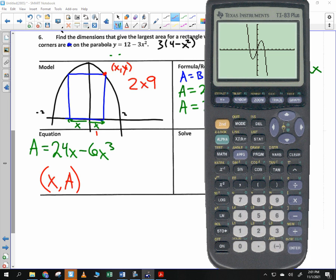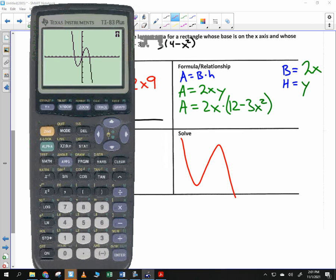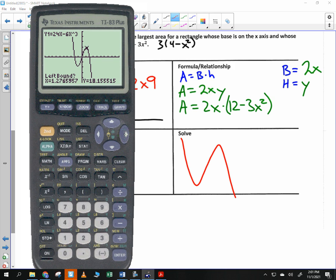All right. I have a maximum. How do I find that maximum? Second. Calculate. Number 4. I go to the maximum. And I move to the left. That's why it says left bound. Then I move to the right, because it says right bound. I press enter on guess. And I get this. I get 1.15 and 18.48.